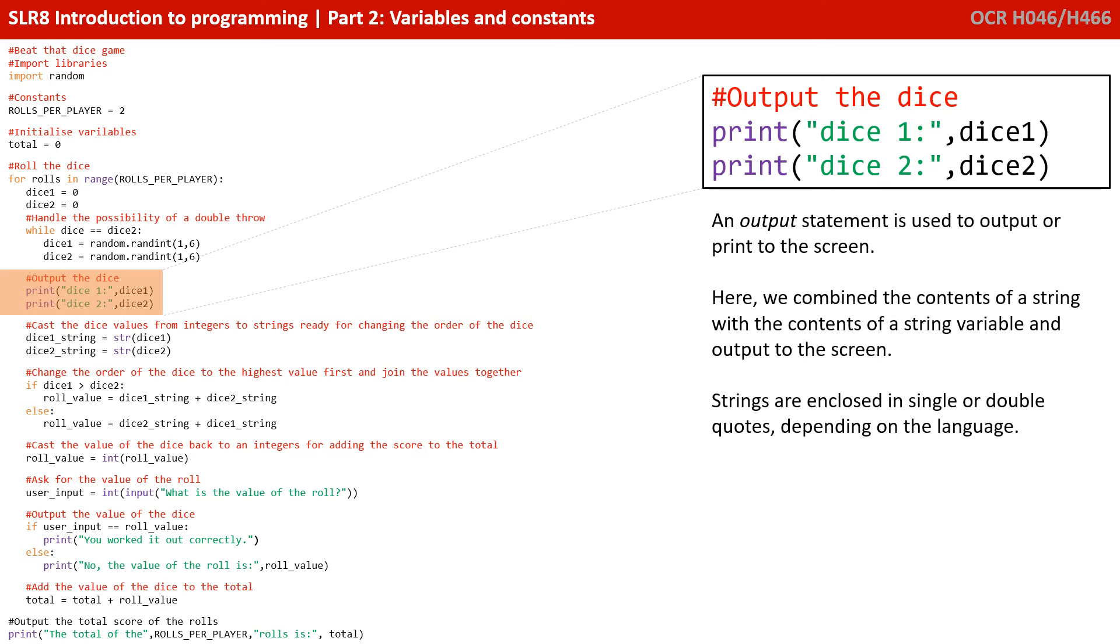The next thing to cover here is outputting, another quite common thing to do in programs. We gather input, we process that input in some way, but typically we also need to report the output to the user so they know what's going on. An output statement is used to print to the screen in Python. Here we've combined the contents of a string, dice one colon or dice two colon, with the contents of a variable, dice one or dice two. You'll notice that strings are enclosed in single or double quotes, and this depends on the language.